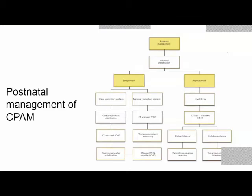The postnatal management algorithm: if the child presents asymptomatically in the neonatal period, perform X-ray. Prefer CT scan at three months of age. If unilobar or unilateral, thoracoscopic lobectomy can be done if expertise is available. If bilobar or bilateral, parenchymal-sparing resection is preferred. If symptomatic with major respiratory distress, perform cardiorespiratory stabilization first, then CT and 2D echo, followed by open surgery. If respiratory distress is minimal, CT and 2D echo can be done, then either thoracoscopic or open lobectomy.